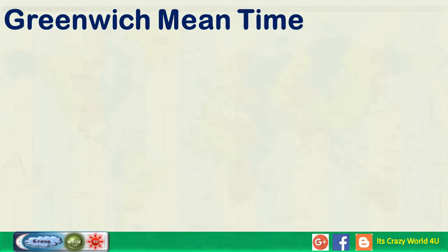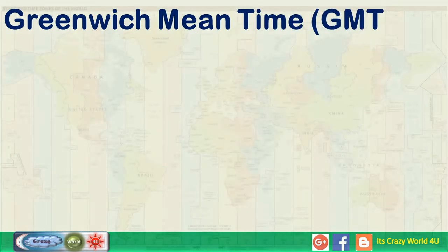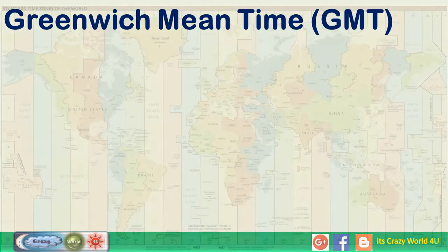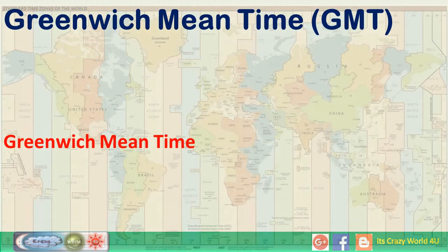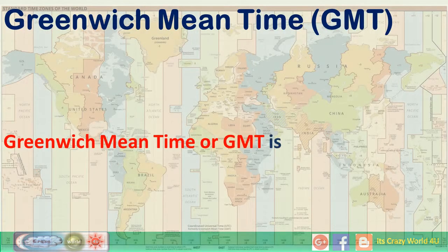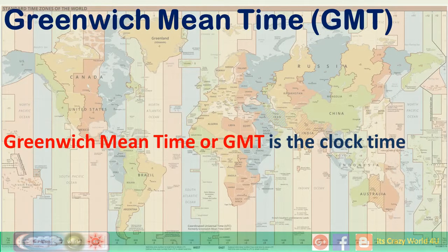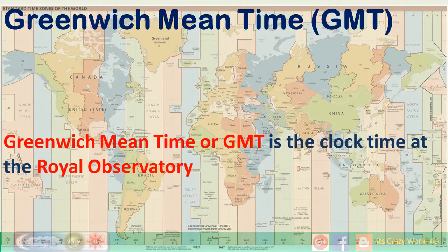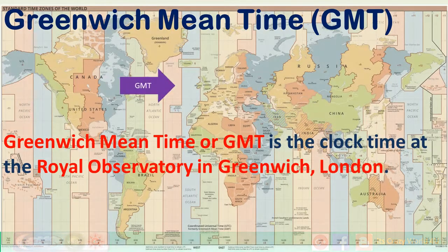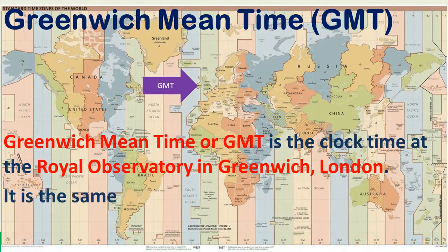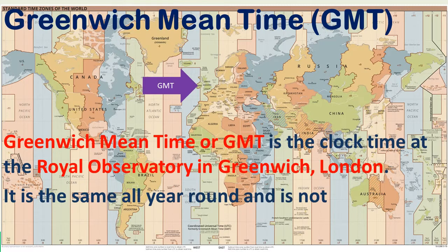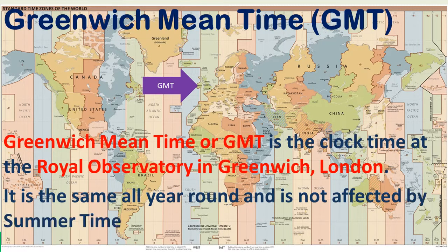Greenwich Mean Time, GMT. Greenwich Mean Time or GMT is the clock time at the Royal Observatory in Greenwich, London. It is the same all year round and is not affected by summer time or daylight saving time.